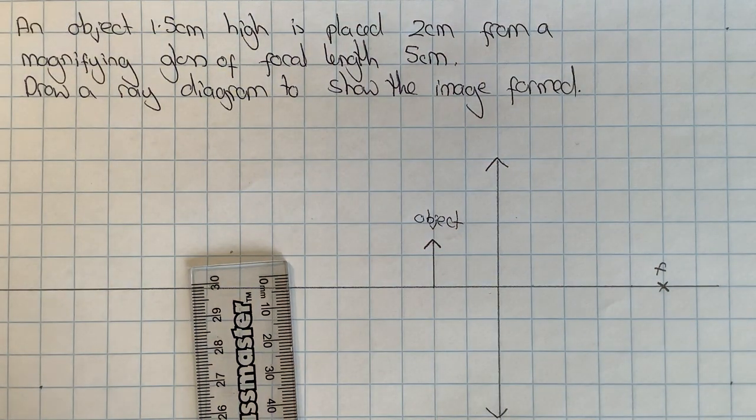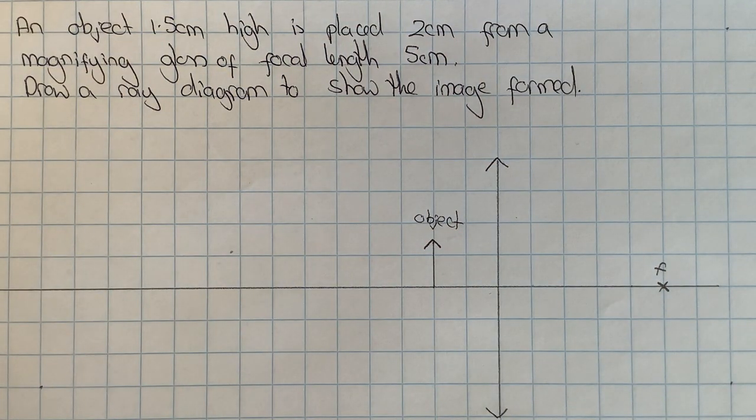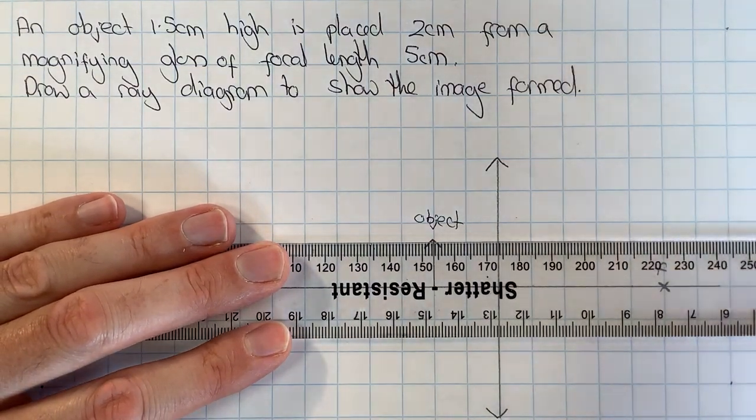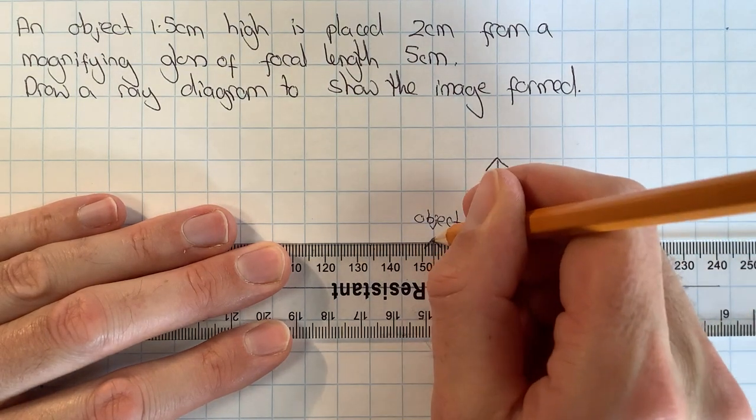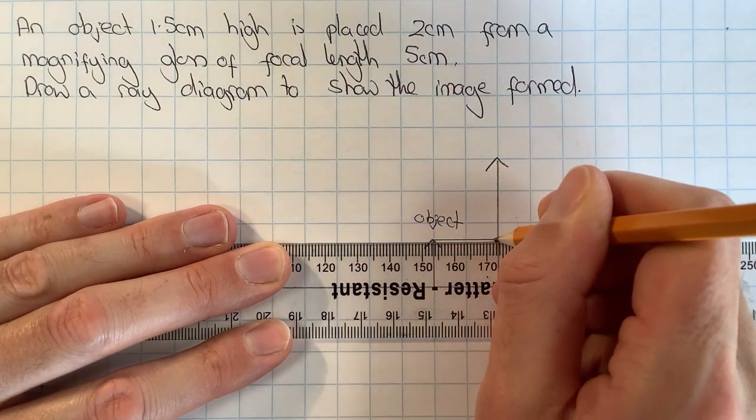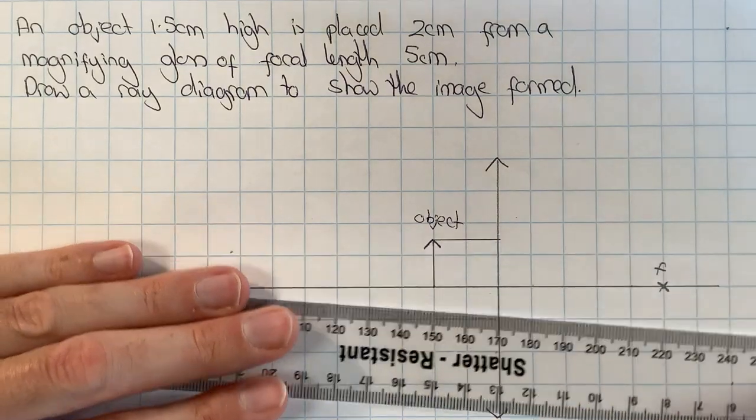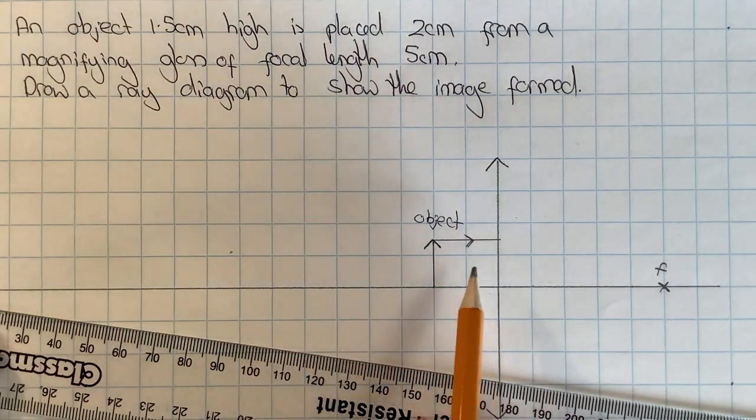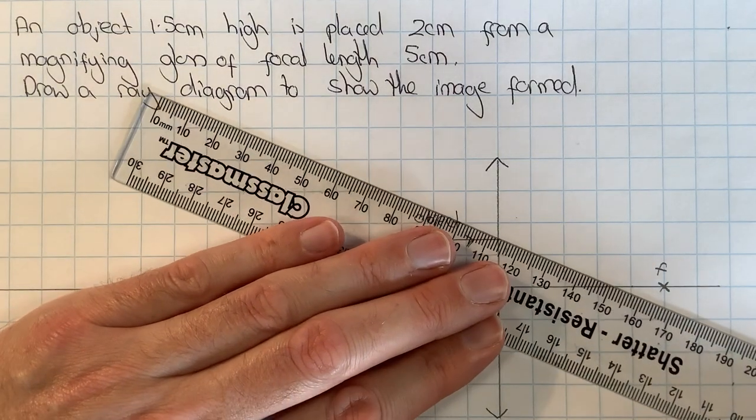As this is a converging lens, I can draw in my special rays to work out how the image is formed. The first one goes horizontally from the top of the object till it hits the lens, and then that ray with an arrow to show it's a real ray refracts.